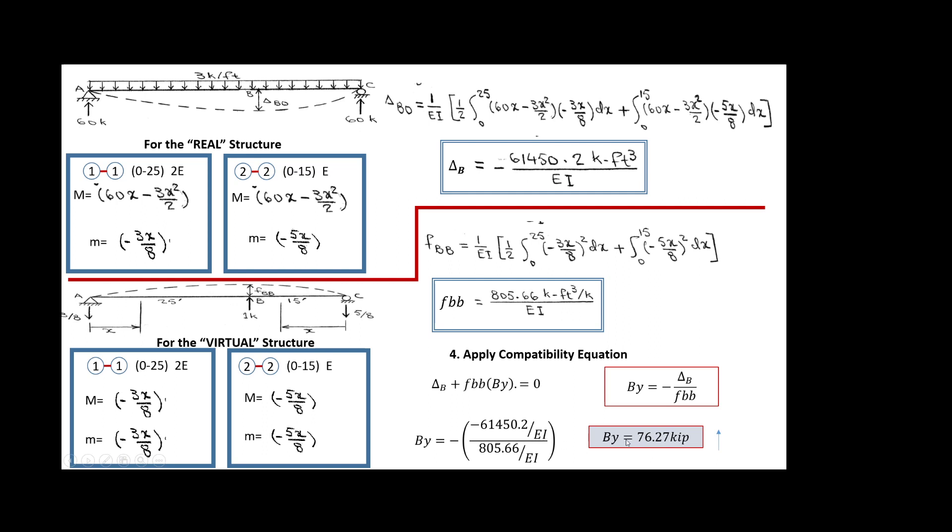This reaction is positive, meaning the direction that I applied this was also positive. And that's going to be the direction of the reaction. If by any chance I got a negative sign here, that would mean that my reaction should go pointing downward. But this is not the case.